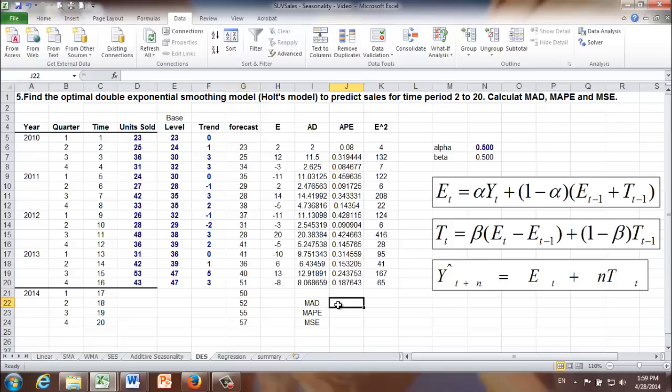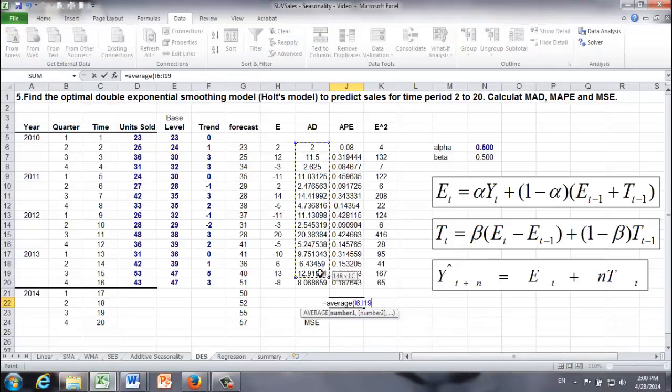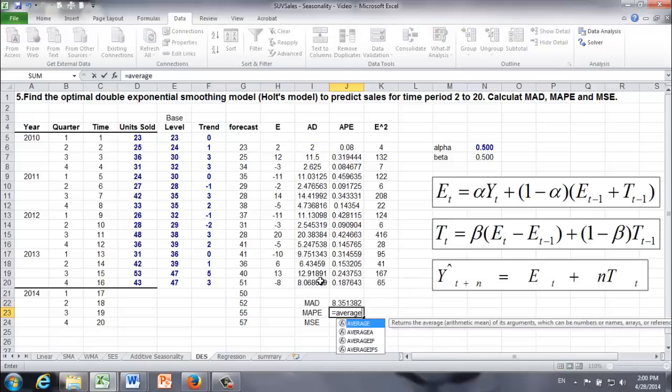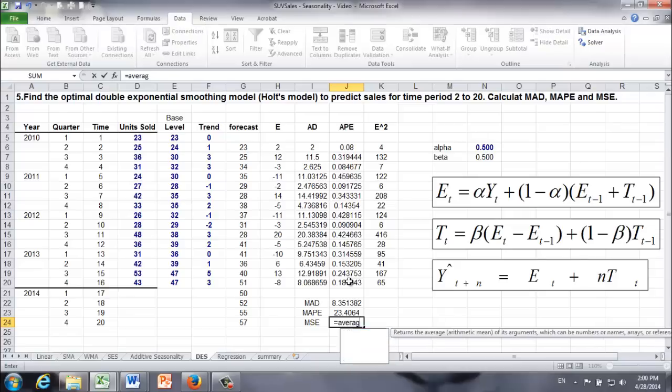Next, let's finish MAD, MAPE, and MSE. MAD is the average of all those ADs. MAPE is the average of all the APEs times 100, and MSE is the average of all the squared forecast errors.